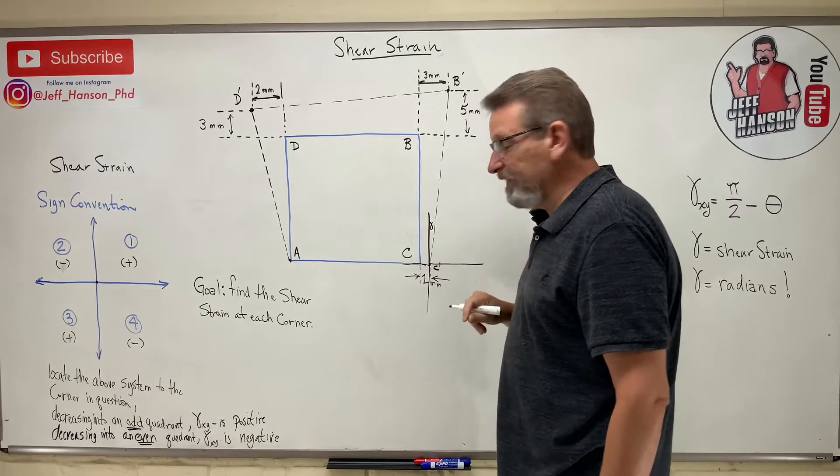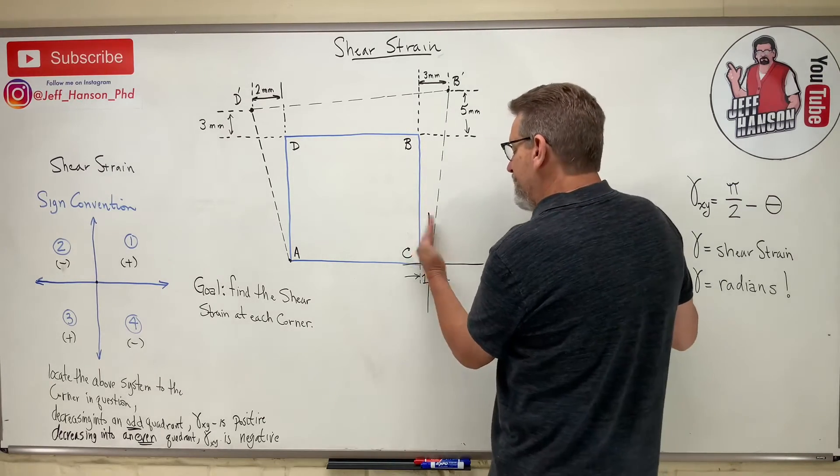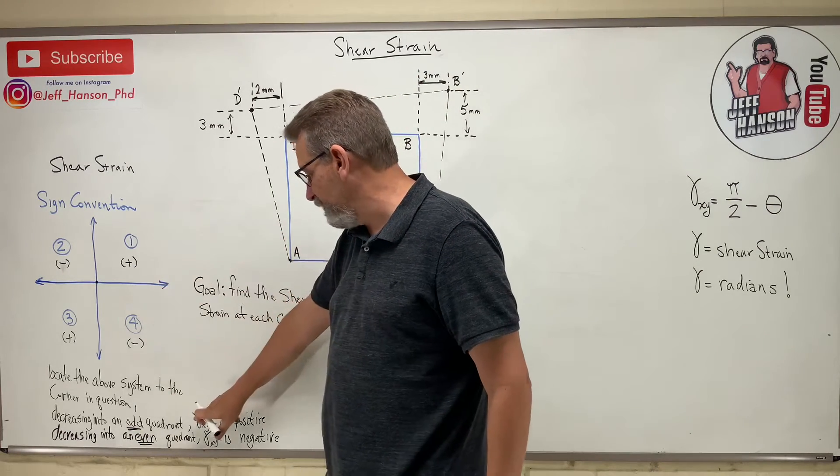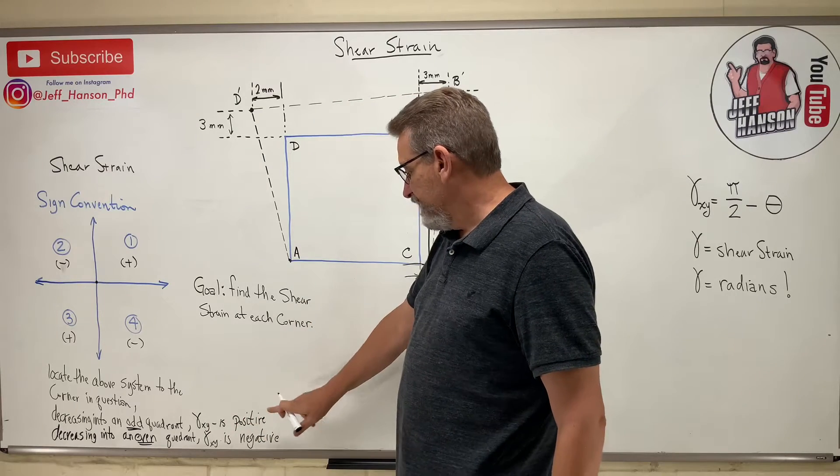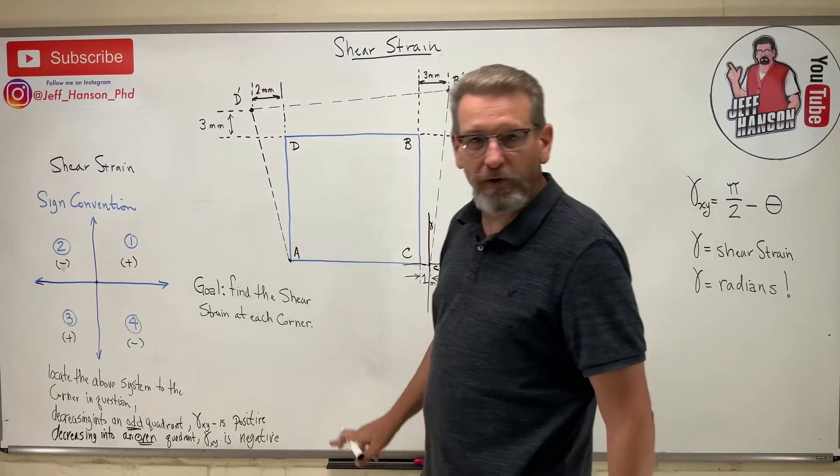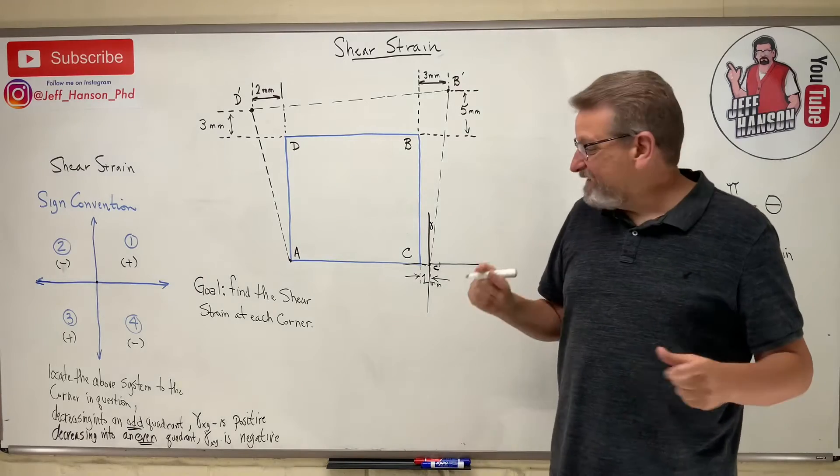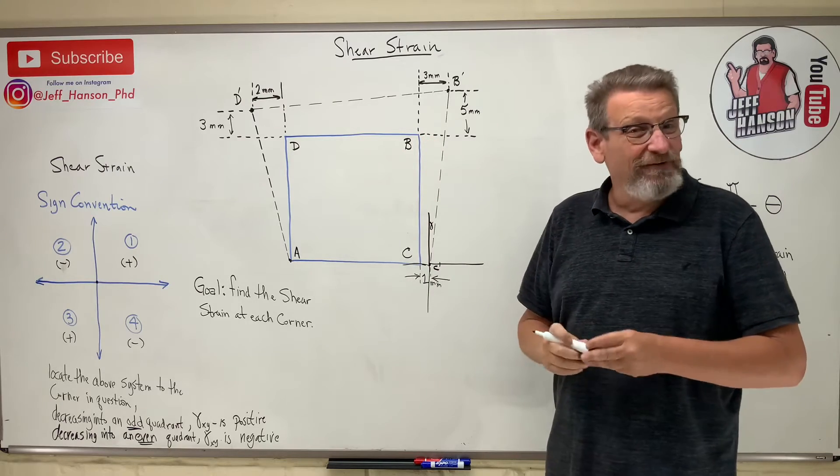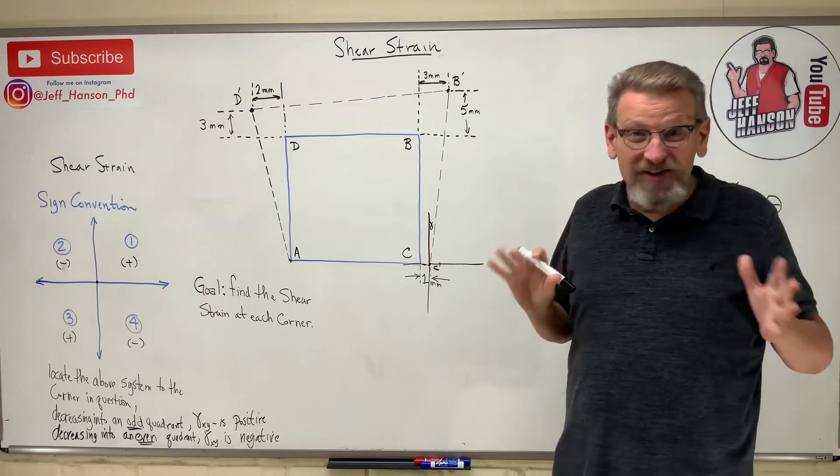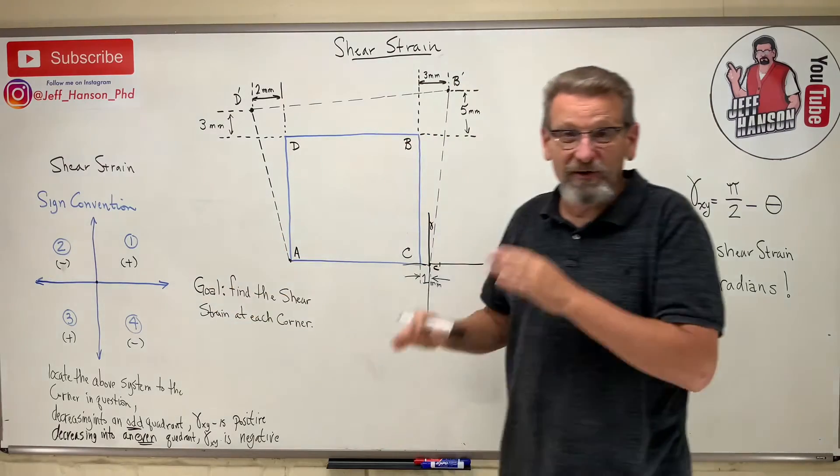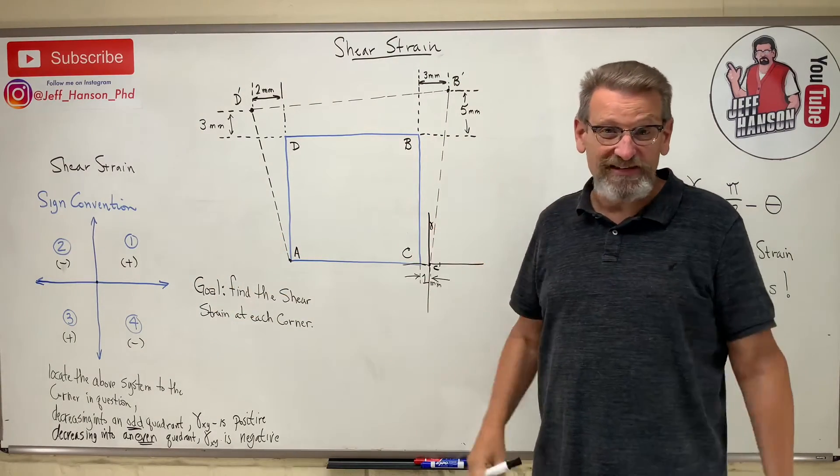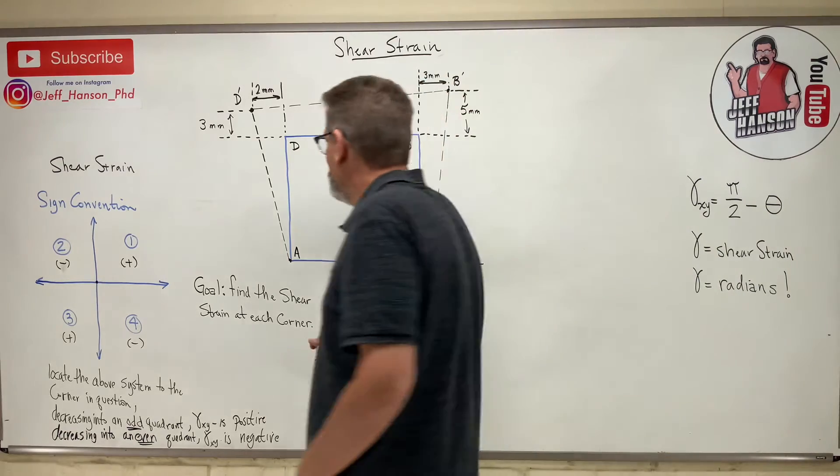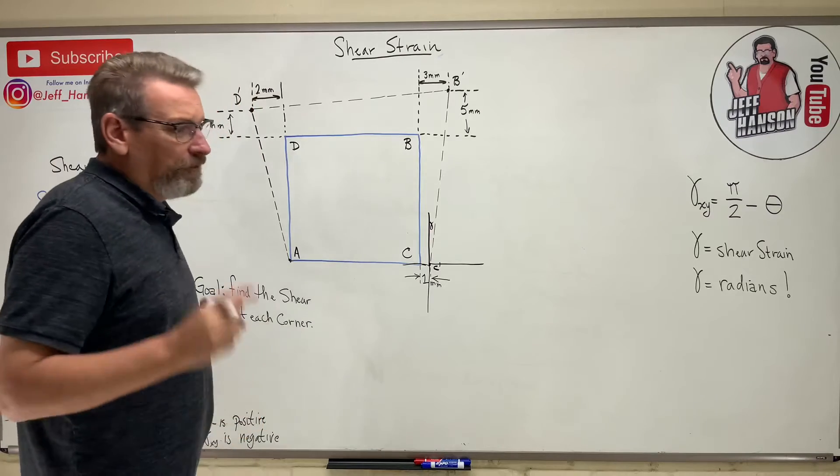So that gamma, is it going to be positive or negative? Well, it's gone into quadrant one, and quadrant one is a positive. So if it decreases into an odd quadrant, it's positive. If it's decreasing into an even quadrant, it's negative. So let's see if we can calculate what the shear strain is at corner A, at corner C, corner B, corner D. The rest of it is pretty simple. The hardest thing about this is, what's the sign convention? The rest of it, just dirt easy. Because all you have to do is find an angle in radians. That's it.